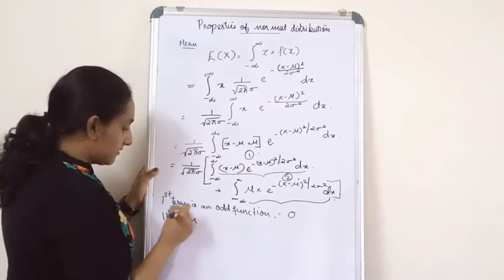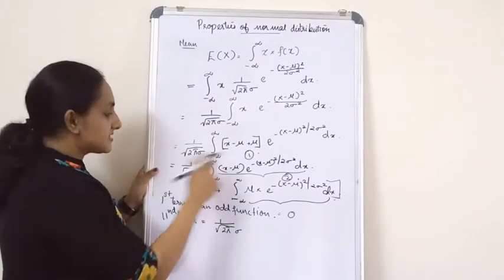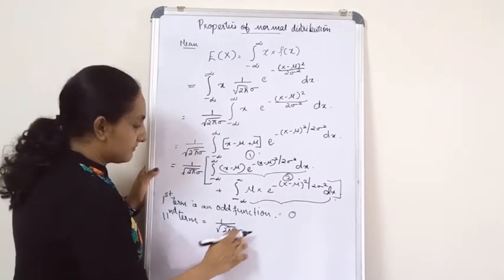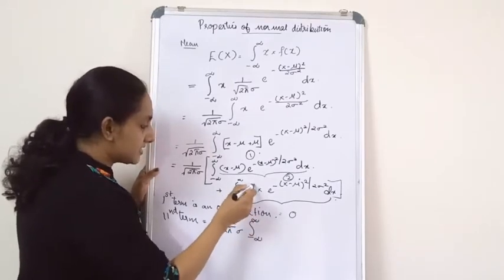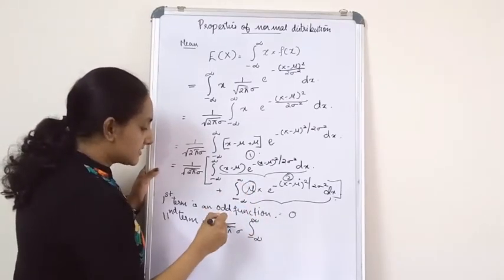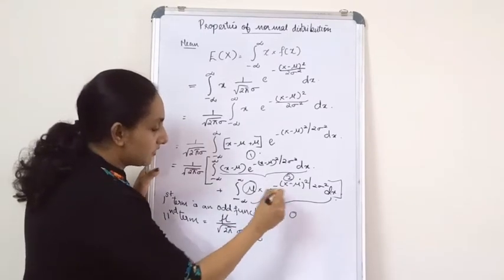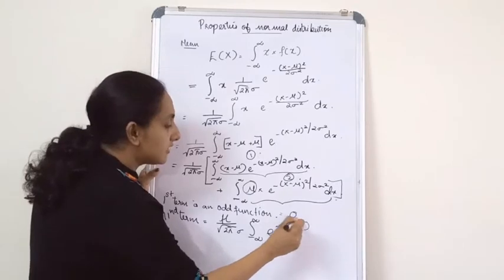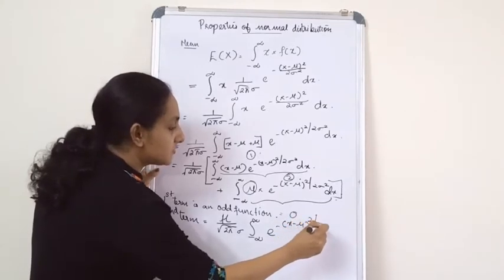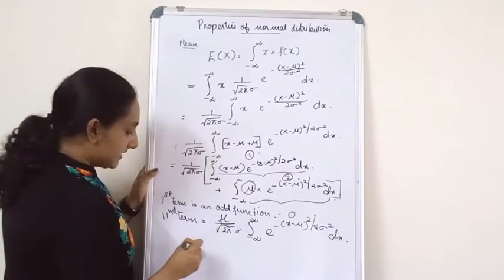The second term is equal to 1 by root 2 pi. Taking this constant inside: 1 by root 2 pi sigma into integral minus infinity to plus infinity. You can take mu outside, since that is a constant. What is left? E raised to minus x minus mu the whole square divided by 2 sigma square dx. Now when you integrate this...